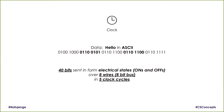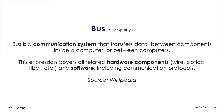Until you get to the fifth cycle, where we send the last eight bits. In total, we send 40 bits. So a bus is basically a communication system that transfers data between components inside a computer or between computers.